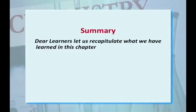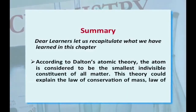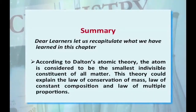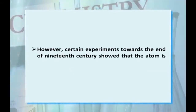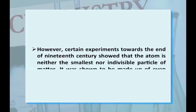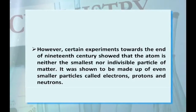Let us recapitulate what we have learned in this chapter. According to Dalton's atomic theory, the atom is considered to be the smallest indivisible constituent of all matter. This theory could explain the law of conservation of mass, law of constant proportion, and the law of multiple proportion. However, certain experiments towards the end of the 19th century showed that the atom is neither the smallest nor the indivisible particle of matter — it is made up of even smaller particles called electrons, protons, and neutrons.